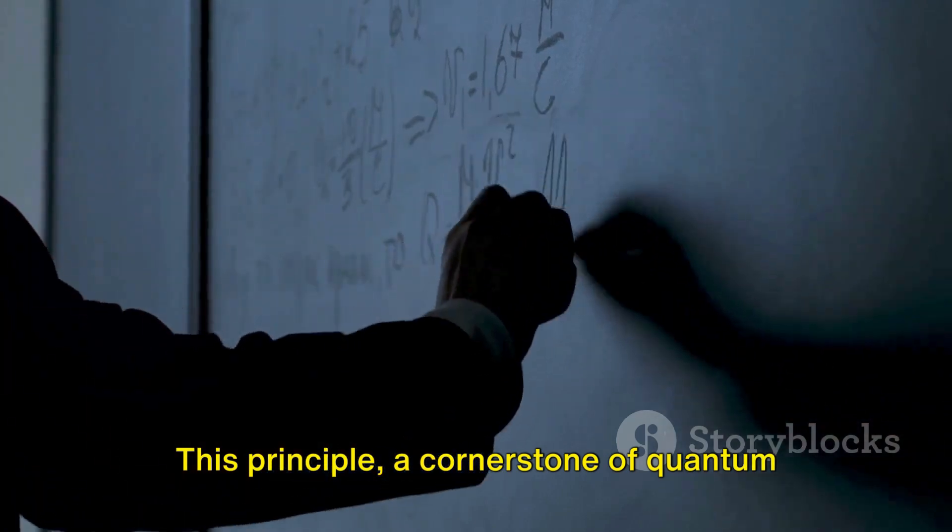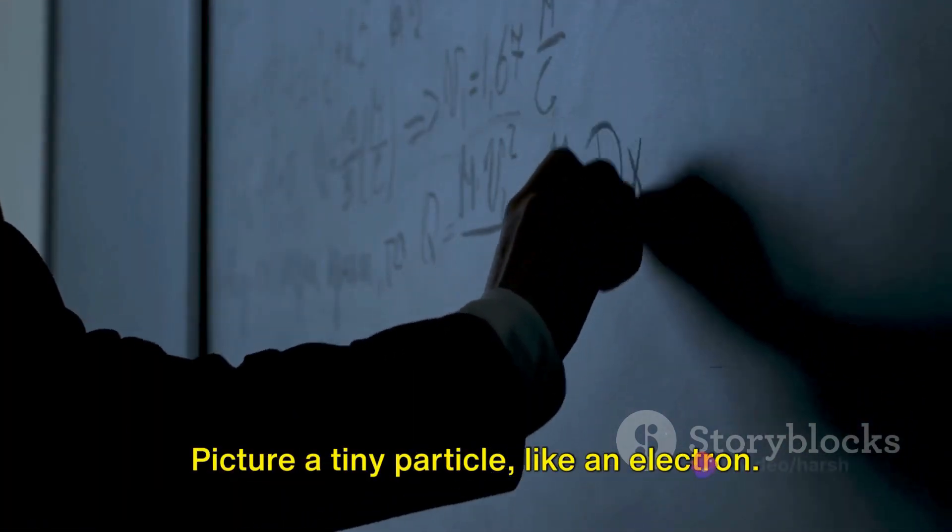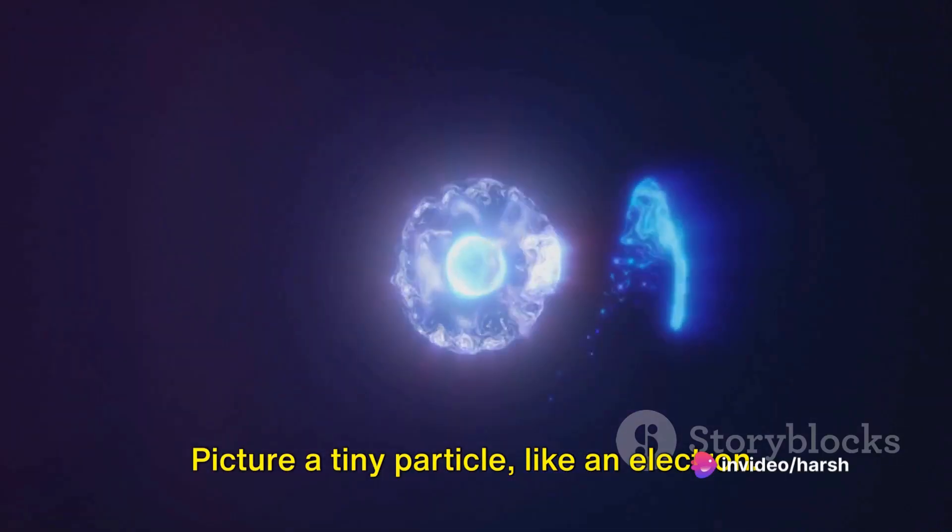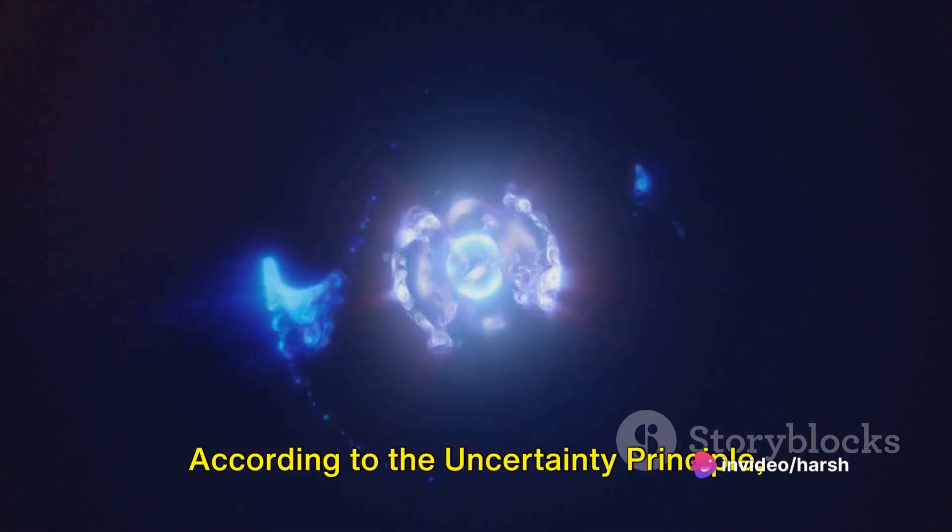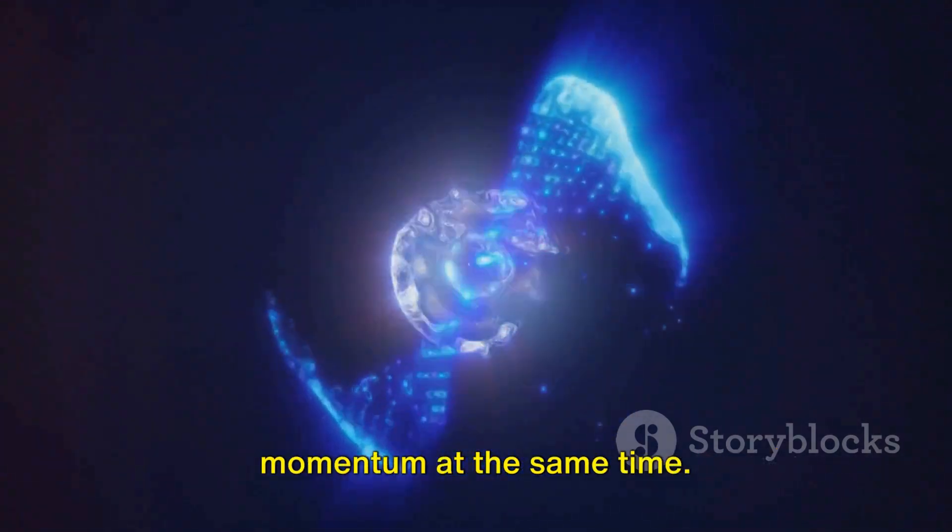This principle, a cornerstone of quantum mechanics, puts a limit on how much we can know about the world around us. Picture a tiny particle like an electron. According to the uncertainty principle, we can't know both its exact position and momentum at the same time.